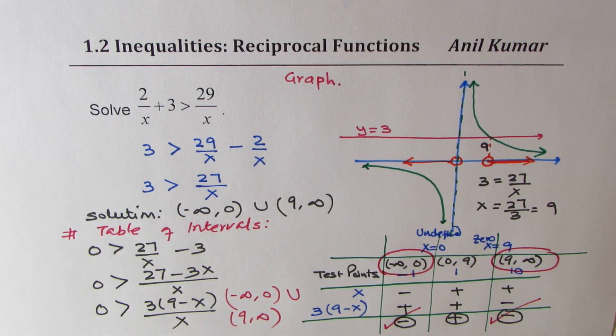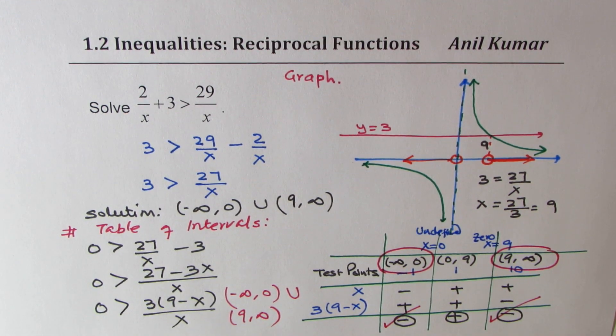So we get our answer as from minus infinity to 0, union from 9 to infinity. Now these are two very good methods to apply for situations where we have rational functions. If a particular method is specified, you have to go for that. Otherwise, you can choose any one of these methods. I hope these steps are absolutely clear and you understand how we have done it.